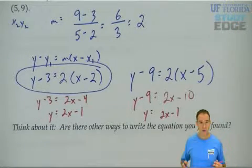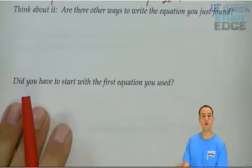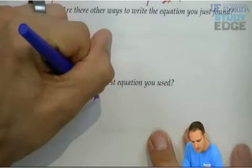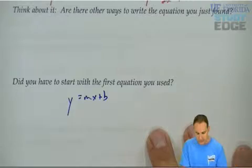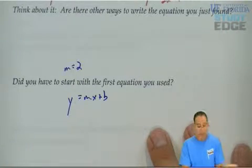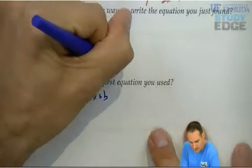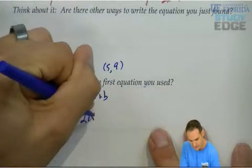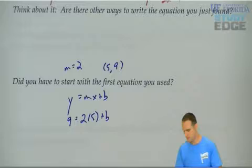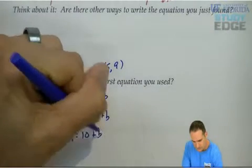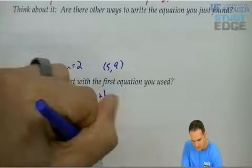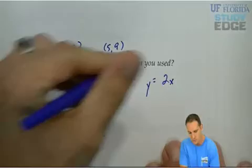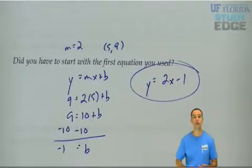Now, the other question I want to ask is, do you have to start with that first equation that I used? No. You could have used a different form. You could have used y equals mx plus b as another way. The slope is 2, and I'll choose one of the points (5, 9). I could plug it all in: y is 9, m is 2, x is 5. But now I need to find b. 9 equals 10 plus b. Subtract the 10 over. b equals negative 1. And now y equals mx plus b. I got y equals 2x minus 1.